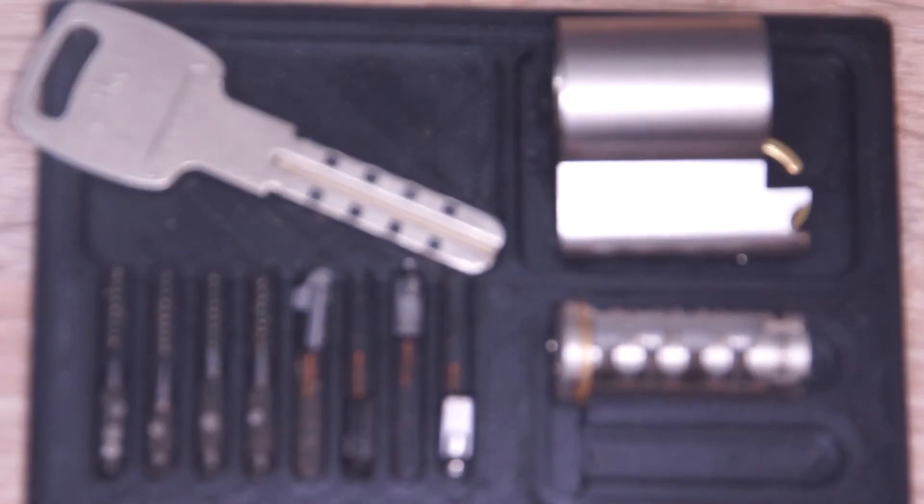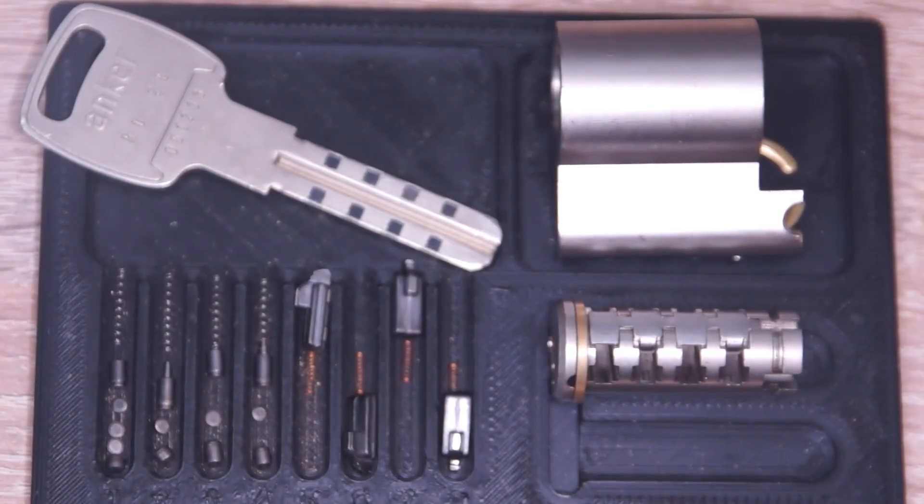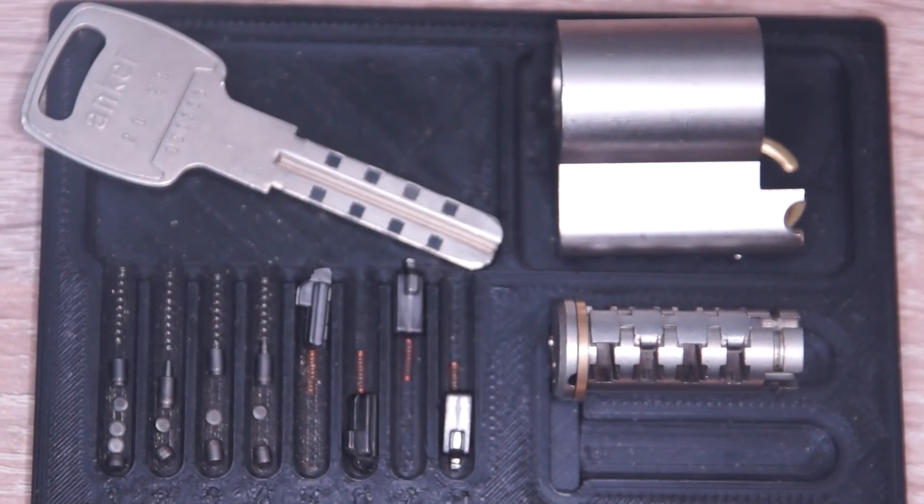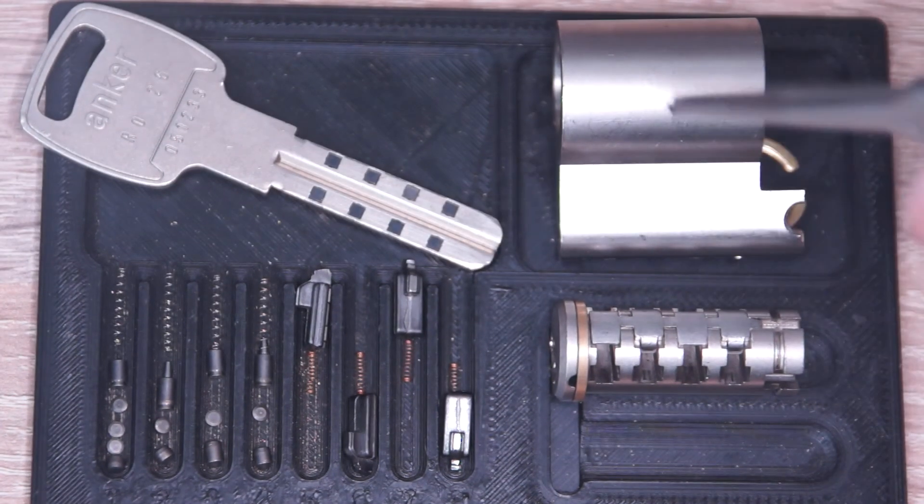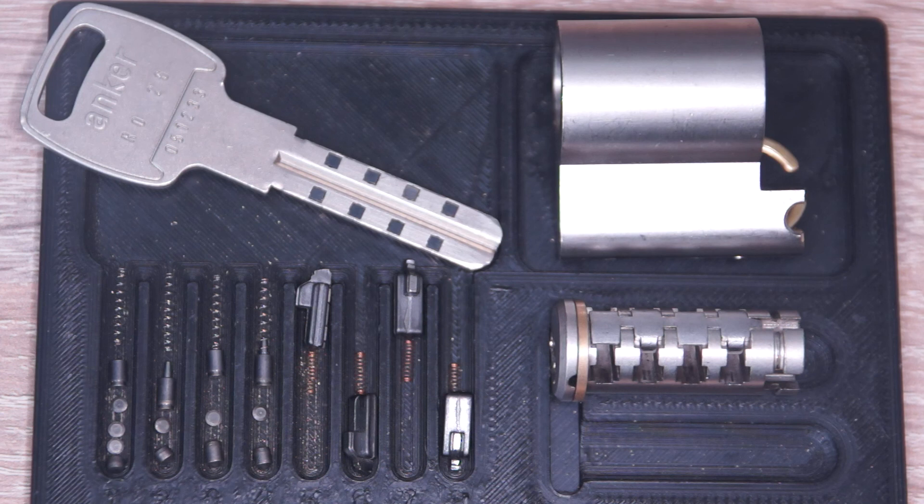And if the key is not inserted or incorrect those sliders will reach out of the core or at least some sliders and block the core rotation. In my lock I have two mastered sliders. The first and the last. And those other ones only have one magnet.